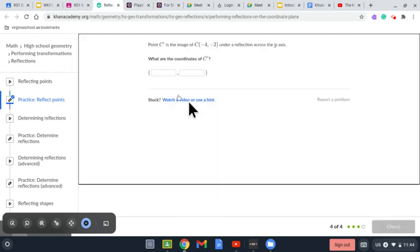For the last question, we have point C' is the image of C(-4,-2) under a reflection across the y-axis. So we have the y-axis here. So what we have to do is change the sign of the x-axis.